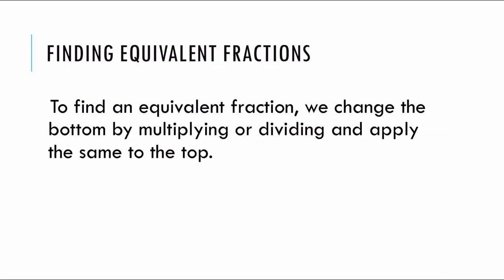In order to find an equivalent fraction, we change the bottom by multiplying or dividing by any number, as long as we apply the same to the top. So, three over nine — if I pick any number, let's say I divide the bottom by three, as long as I divide the top by three, I come up with an equivalent fraction of one over three.